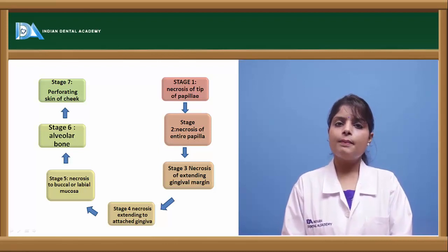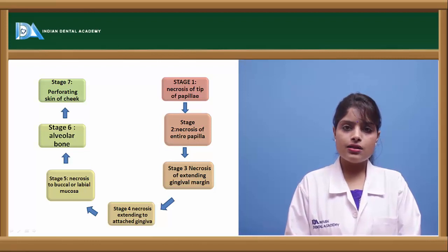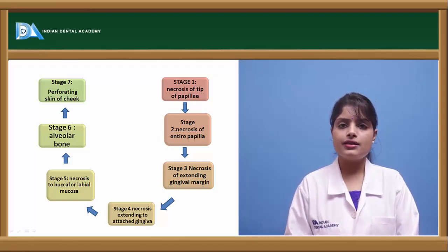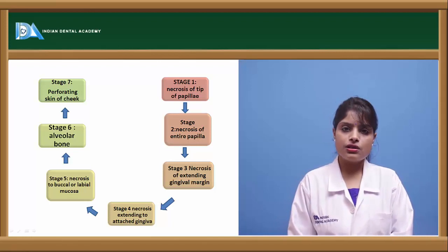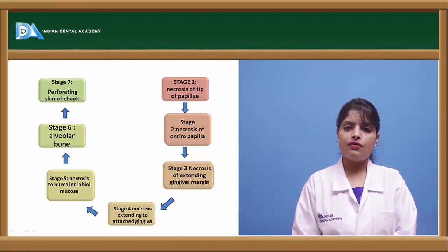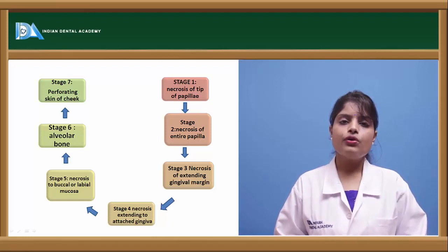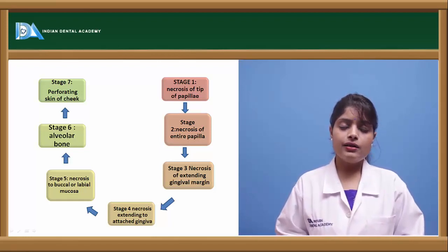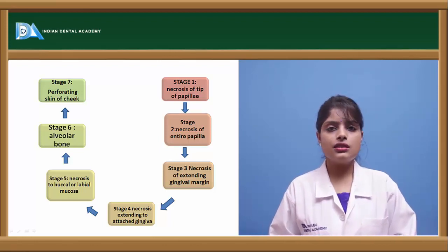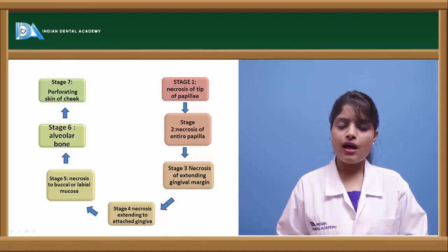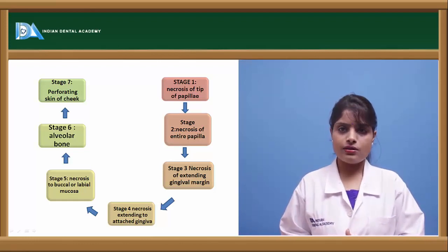ANUG progresses in stages. Stage 1: the tip of the interdental papilla is involved. Stage 2: the ulcer slowly spreads throughout the interdental papilla. Stage 3: it spreads to the gingival margin. Stage 4: the whole marginal gingiva is covered, progressing to the attached gingiva. Stage 5: necrosis extends to the buccal or labial mucosa. Stage 6: the alveolar bone is involved. Stage 7: the skin of the cheek is perforated.